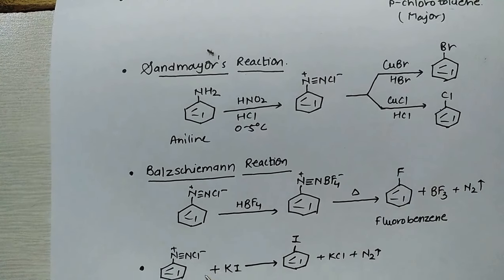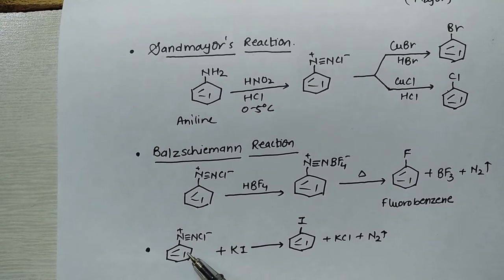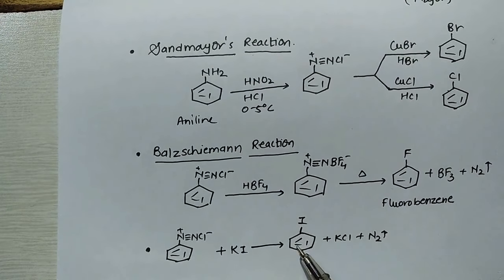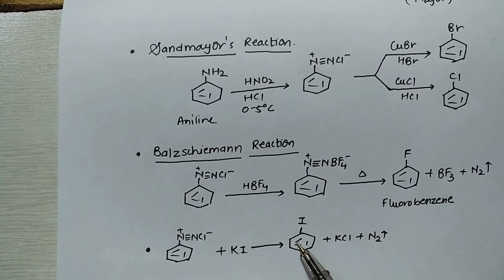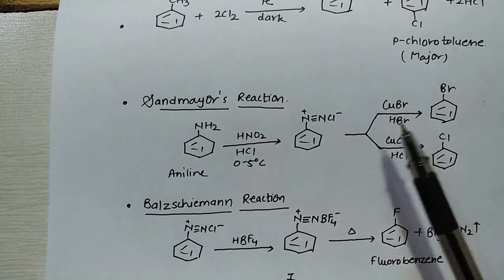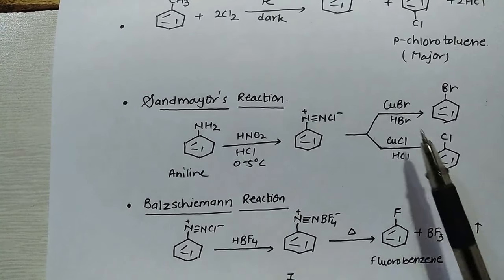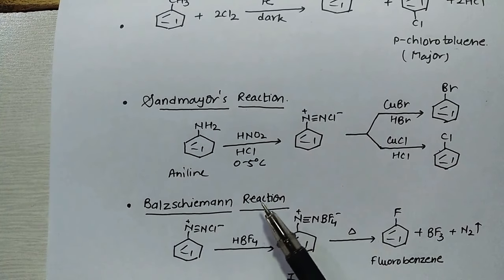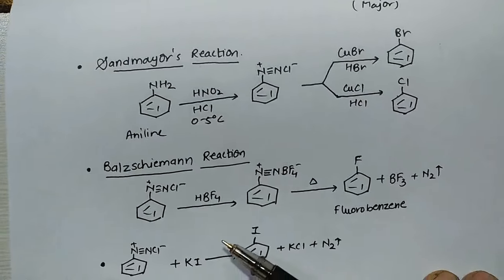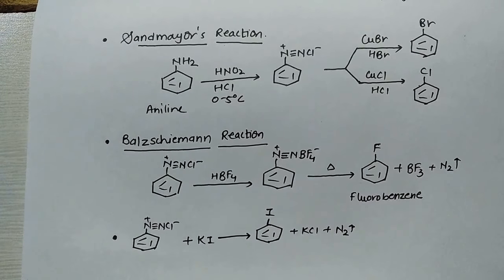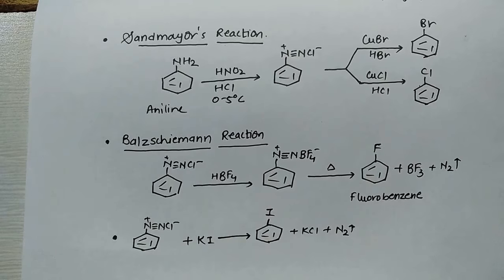These are two different things. Now talking about diazonium chloride, if you treat with potassium iodide, you will get iodobenzene. So iodobenzene is also formed, fluorobenzene is also formed, chlorobenzene is also formed, and bromobenzene is also formed. Remember, chlorobenzene and bromobenzene form by Sandmeyer's reaction, fluorobenzene by Balz-Schiemann reaction, and iodobenzene has no specific name. So these are the methods of preparation.